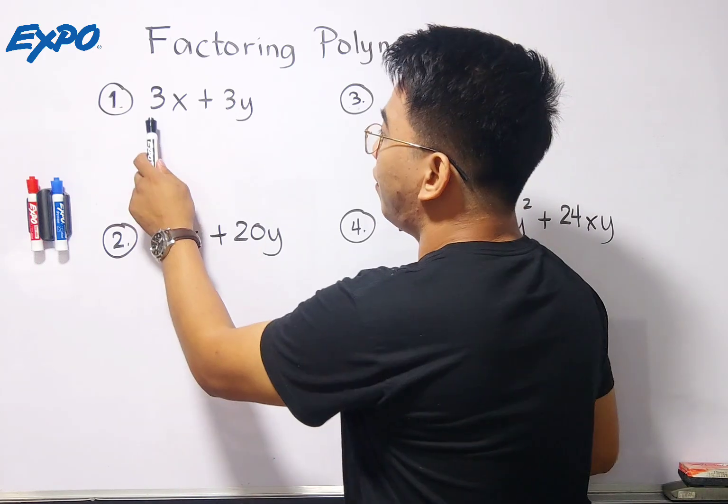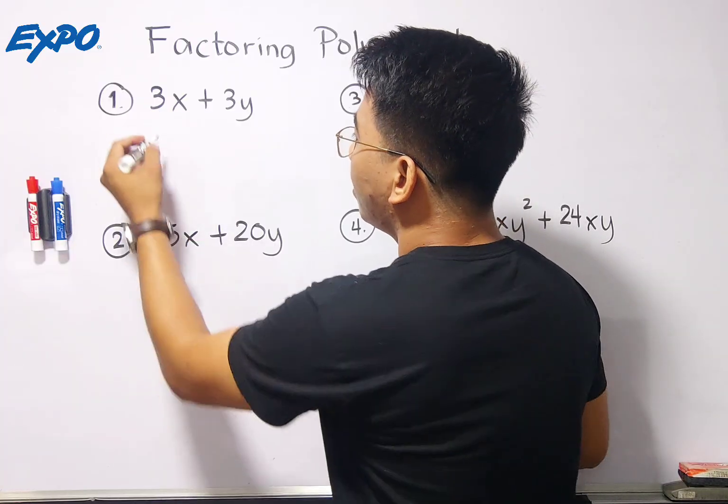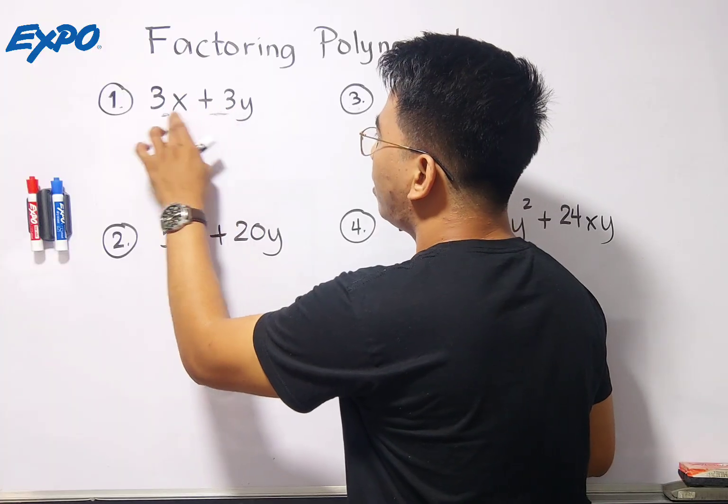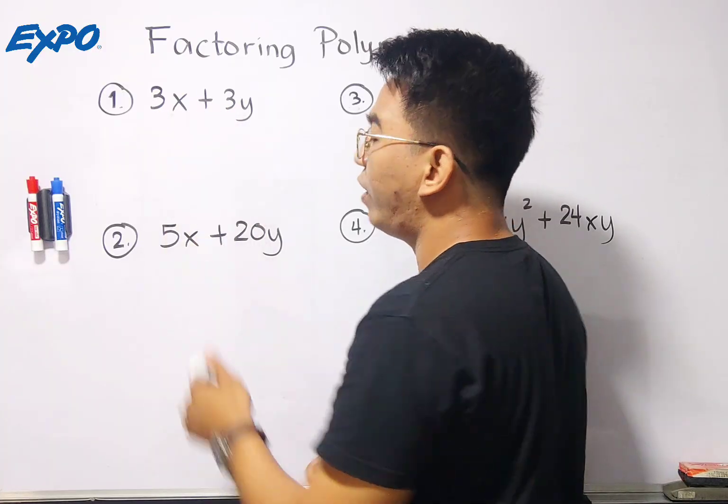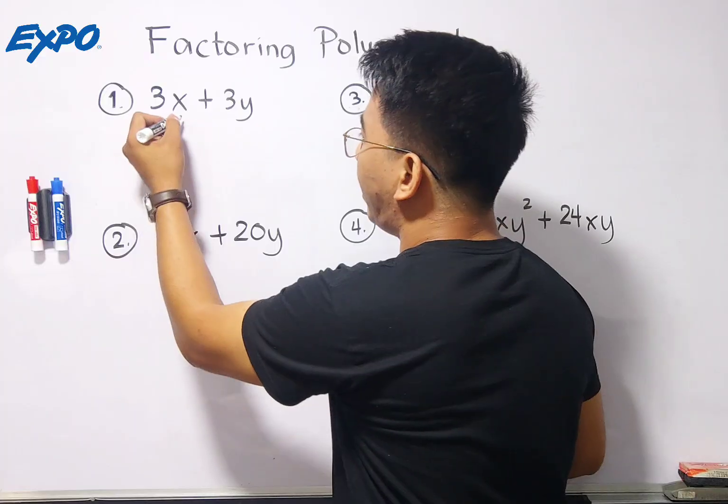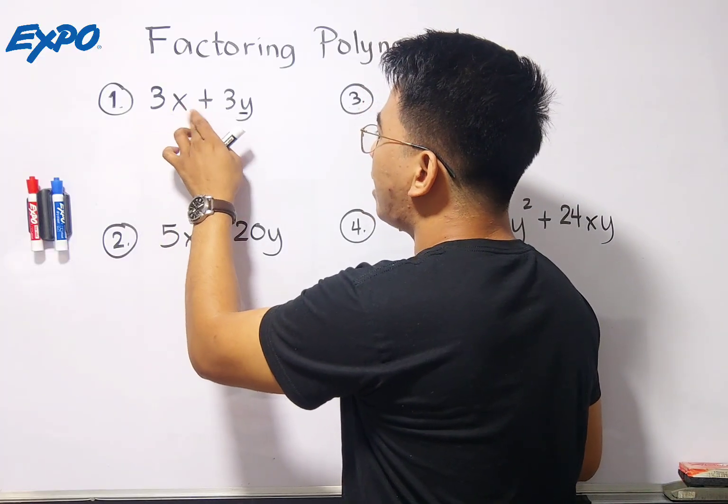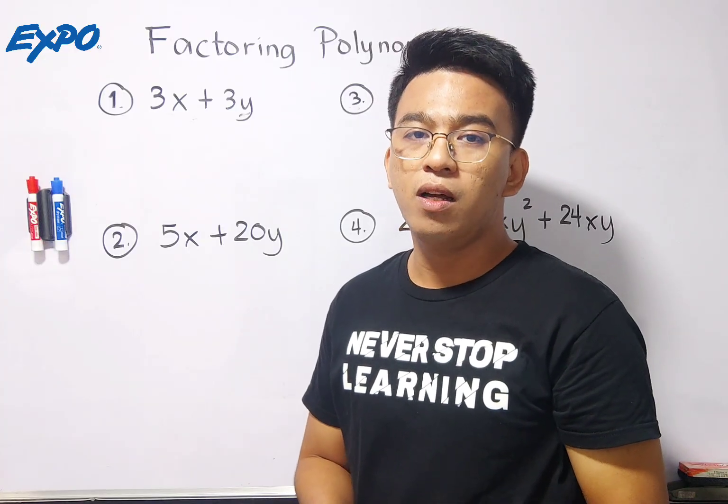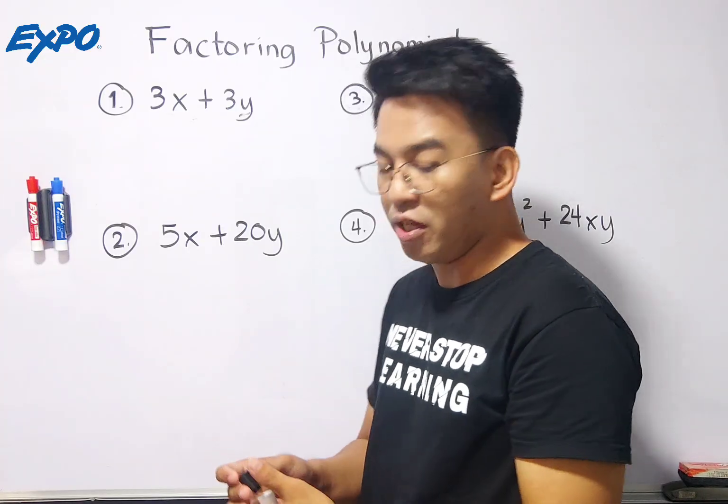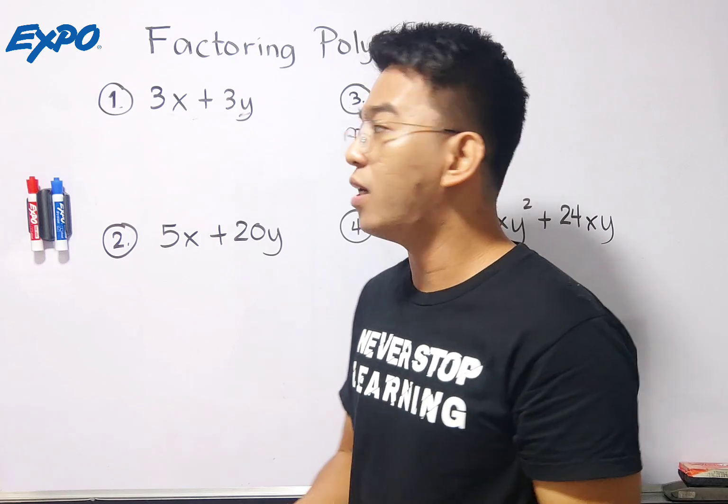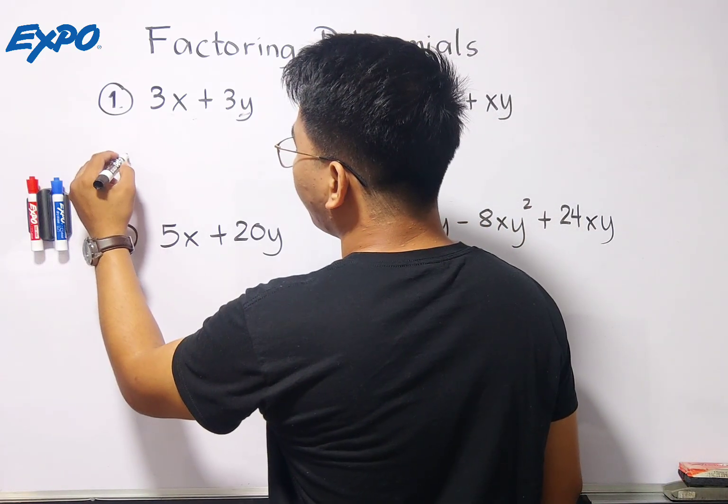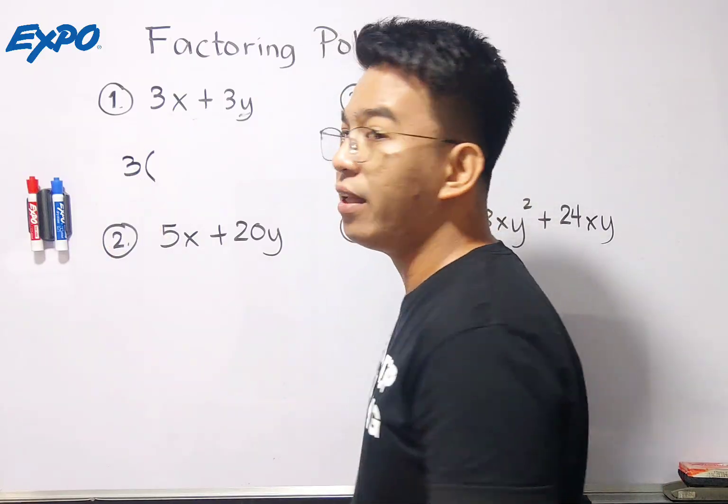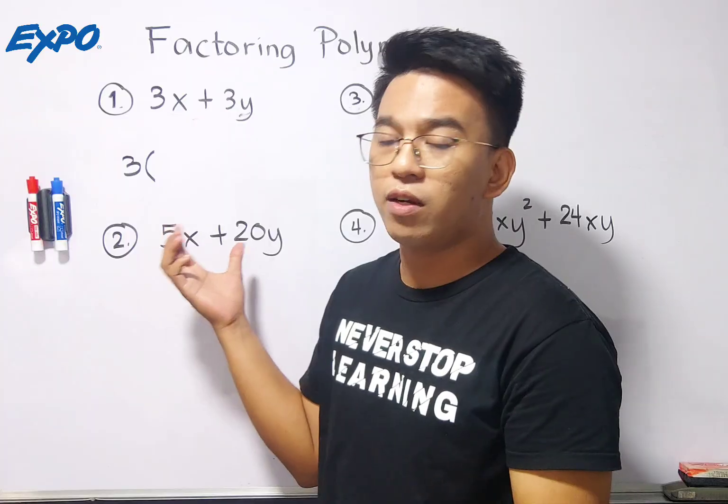There needs to be something common. Here, what you need to look at is, what is common between the coefficients? We have here the numbers. These are the numbers. And after that, what is common within the variables of each term? We have here the variable x and the variable y. In this given example number 1, we don't have anything common in the variables but we have a greatest common factor in our coefficient which is equal to 3.